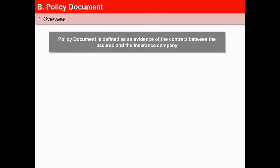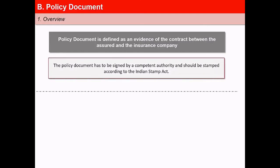A policy document is defined as an evidence of the contract between the assured and the insurance company. It is not the contract itself, because if the policy document is lost by the policy holder, it does not affect the insurance contract. The policy document has to be signed by a competent authority and should be stamped according to the Indian Stamp Act.